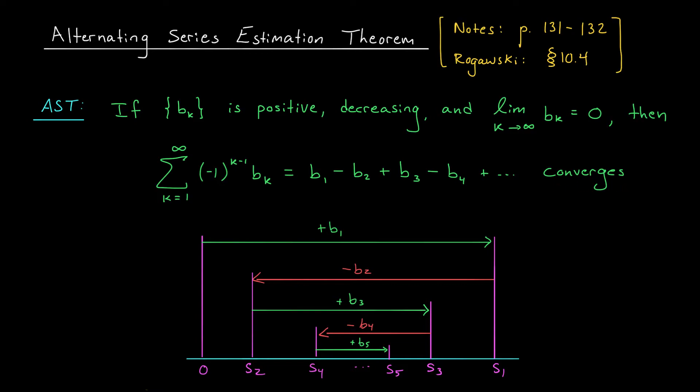The intuition behind this test was given by the following picture. Suppose that you start at 0 and add your first term b1. That moves you over here to the right to get your first partial sum. When you then subtract b2, you move back to the left, but you're not going to go all the way back to start because your terms are decreasing. When you add b3, you're going to move back to the right, but again, you don't move as far to the right as you did before.